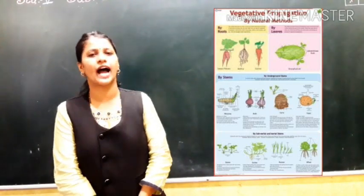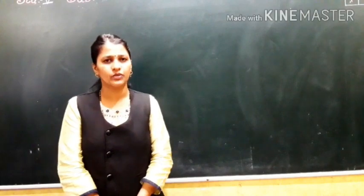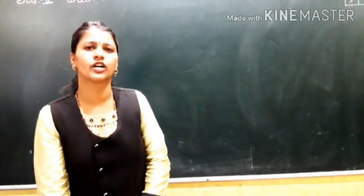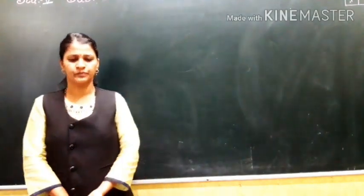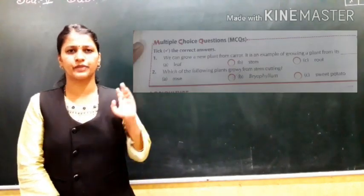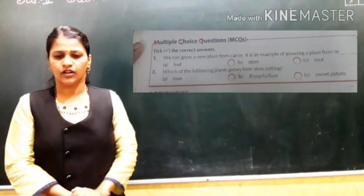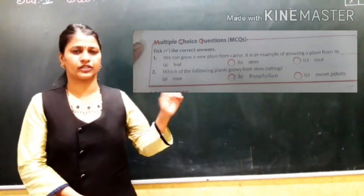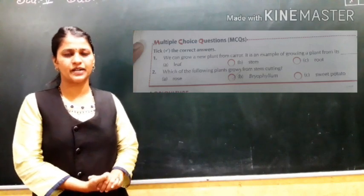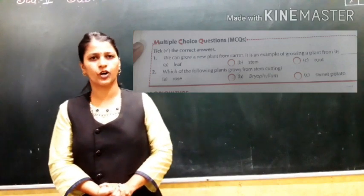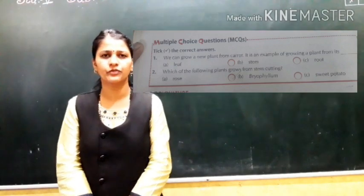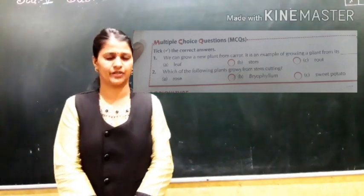Today's work is to note down the key words in your notebook. There are some MCQs in your textbook on page number 18. For example: we can grow a new plant from the root of a carrot — carrot is an example of root reproduction. Which of the following plants grow from a stem cutting? — the answer is rose. In the next video, we are going to discuss about agriculture. Thank you.